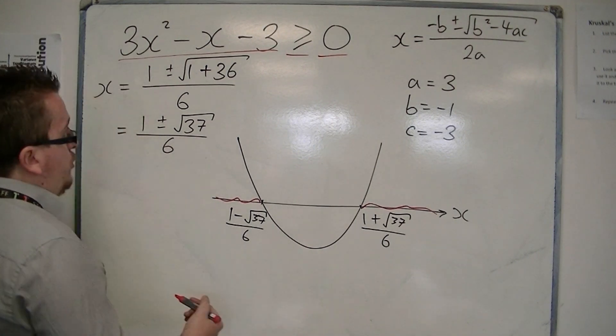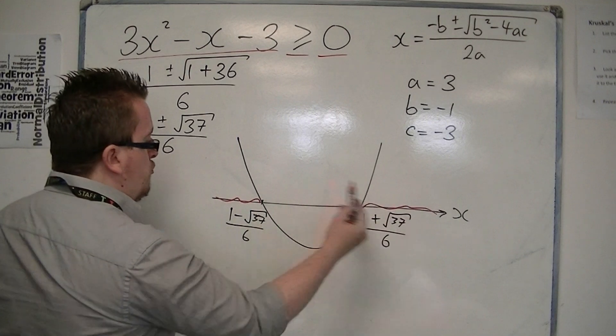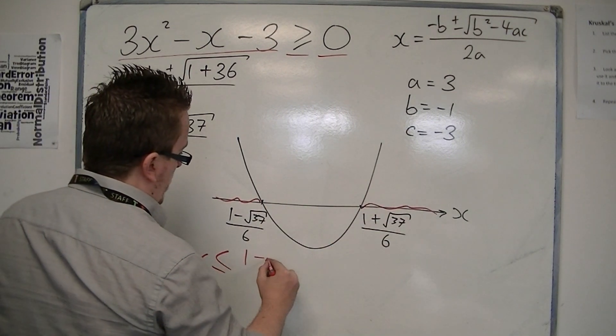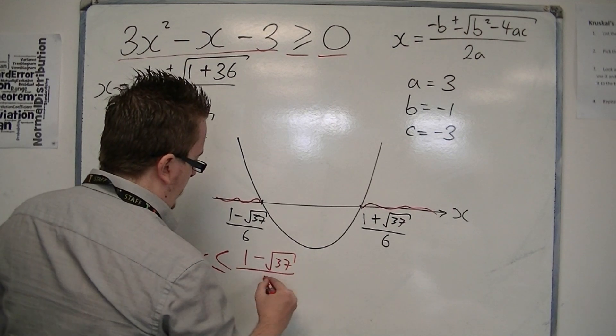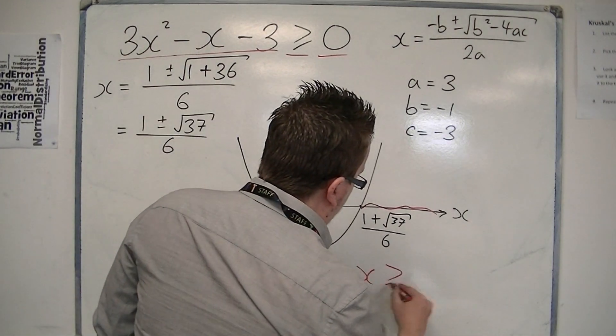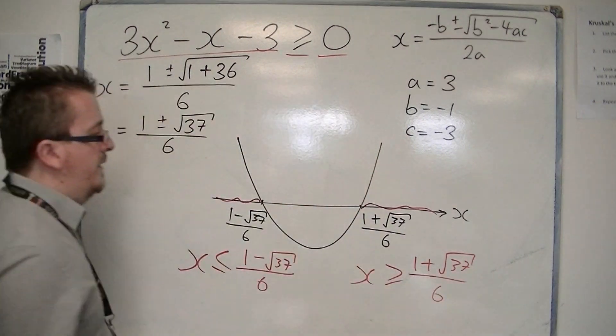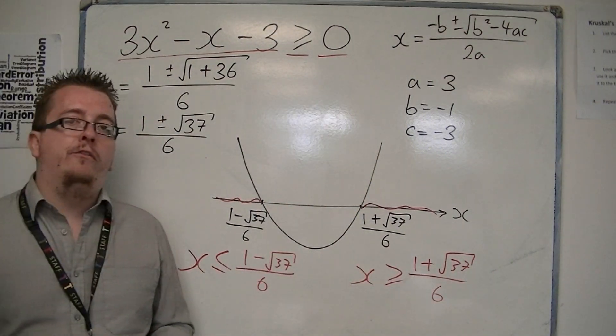So the two solutions, the two inequalities, because it's two regions, there's x is less than or equal to 1 minus root 37 over 6, and x is greater than or equal to 1 plus root 37 over 6. And they're the two solutions that we're looking for.